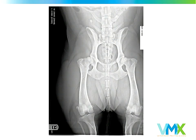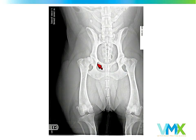By the time we get to moderate hip dysplasia, it's fairly obvious: the hips are subluxated, there's remodeling of the femoral neck on both sides, minor arthritic changes, osteophytes on the caudal acetabular margin, and the lateral acetabular margin is notched inward on the right hip — all creating a decrease in percent coverage of the femoral head.